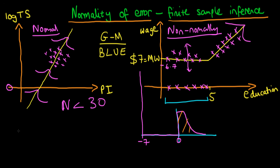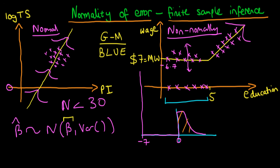Comparing the two situations: on the left hand side, because we have assumed that our errors are normally distributed, it turns out that the sampling distribution of beta hat is exactly normally distributed — note the word exactly, with no asymptotic argument needed. It happens that if our errors are exactly normally distributed then beta hat itself is normally distributed. And because the Gauss-Markov conditions hold, beta hat is unbiased, so it is normally distributed around the true population parameter beta.